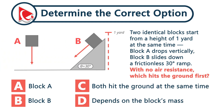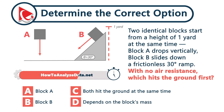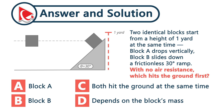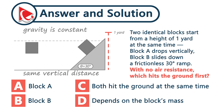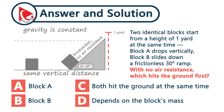Two identical blocks start from a height of one yard at the same time. Block 1 drops vertically. Block B slides down a frictionless 30-degree ramp. With no air resistance, which hits the ground first? Both blocks start at the same height and are only affected by gravity. Since they fall the same vertical distance and gravity is constant, they take the same amount of time to reach the bottom. The ramp alters the path of one block, but because it's frictionless with no air resistance, it doesn't affect the time for the vertical descent. The correct answer is choice C.